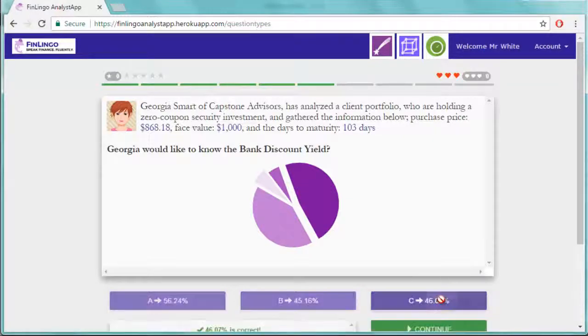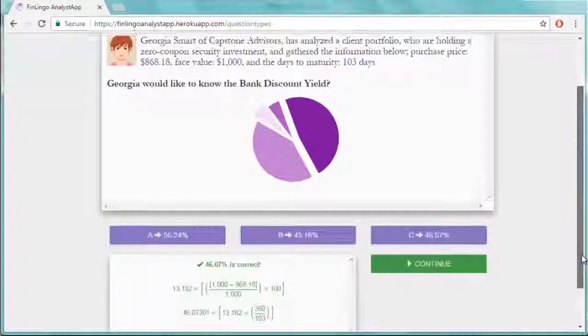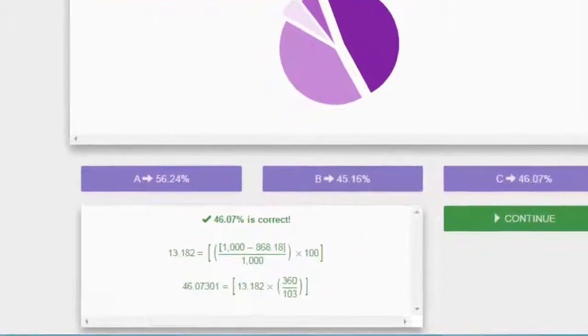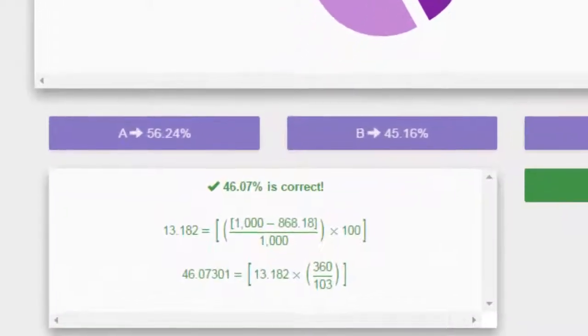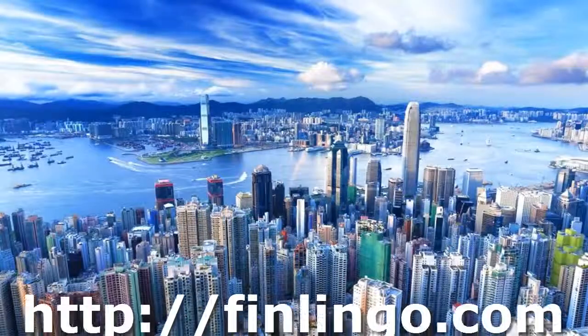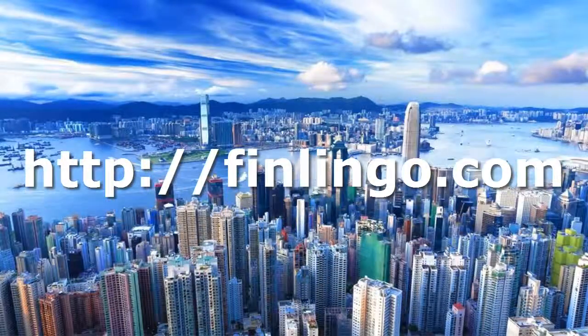Head over now to finlingo.com to try out an infinite number of bank discount yield questions, and other different yield questions, until you've got all four main types fully sorted out in your head. Also take a look at our three other videos on the holding period yield, the effective annual yield, and the money market yield, which are also related to the bank discount yield. Finlingo – speak finance fluently.